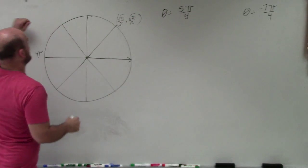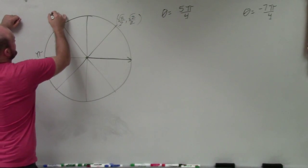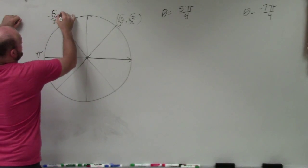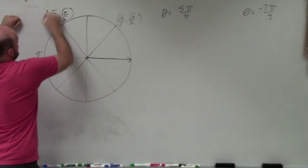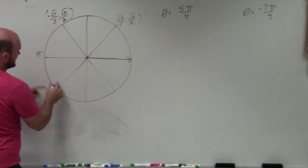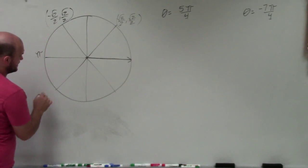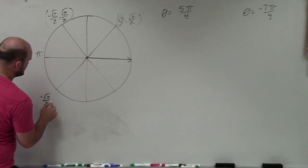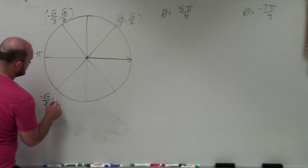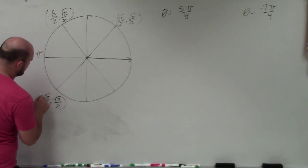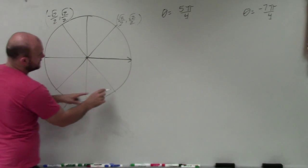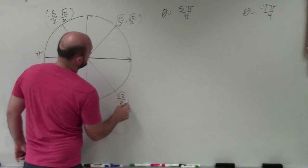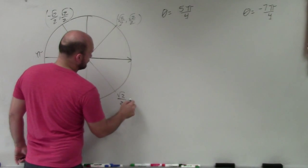The point in the first quadrant is square root of 2 over 2, square root of 2 over 2. Reflecting over the y-axis, the x-coordinate becomes negative, giving negative square root of 2 over 2, square root of 2 over 2. In the third quadrant both x and y are negative: negative square root of 2 over 2, negative square root of 2 over 2. In the fourth quadrant, x is positive but y is negative.